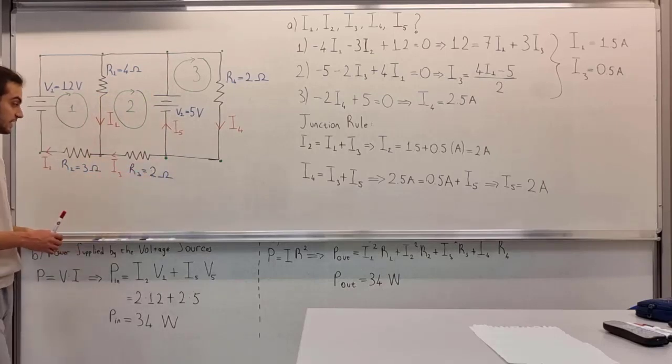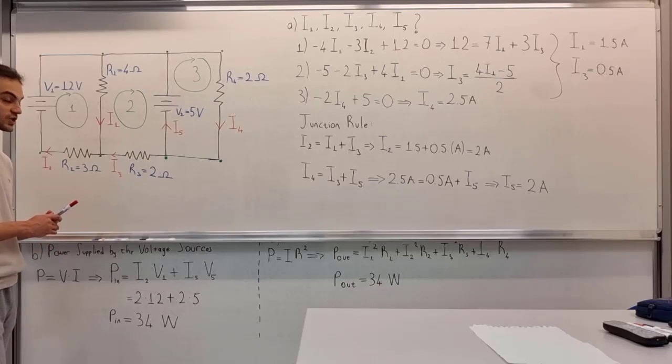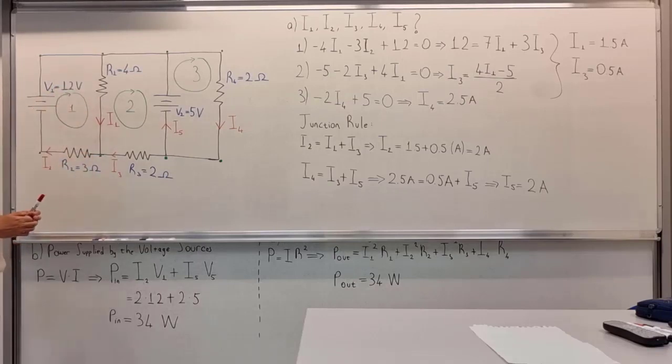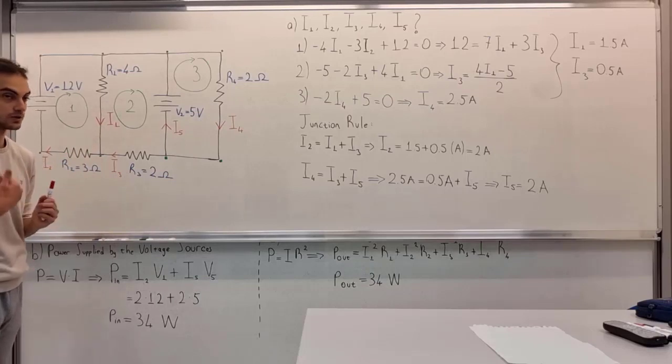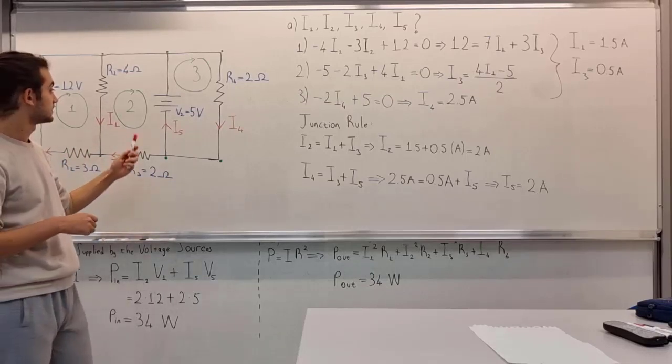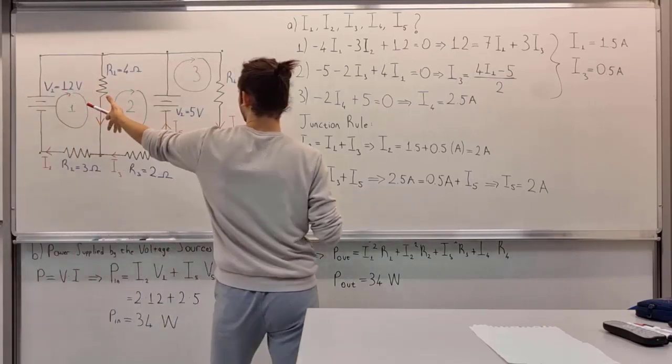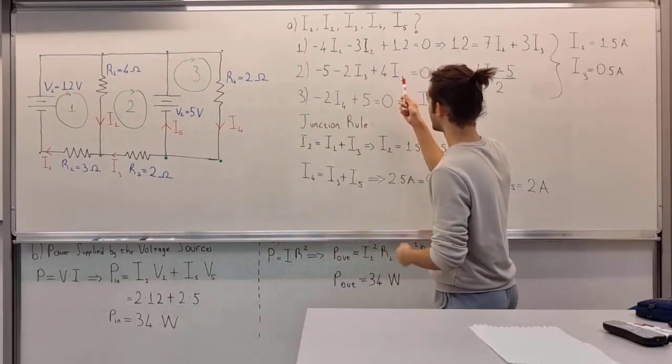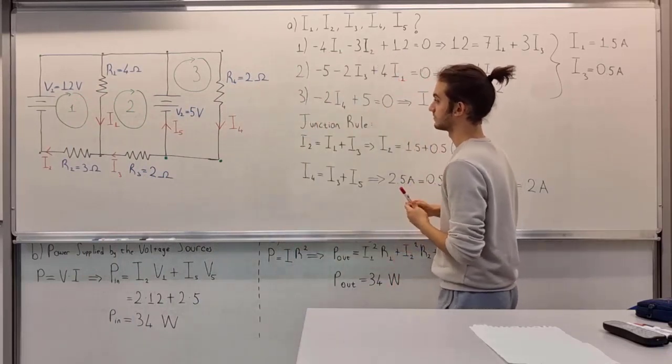whose current is in the same direction as we are going, so it comes with a minus sign again - minus 2I3. From point D to A, we see that the I1 current is in the opposite direction, so it has to come with a positive sign. Its voltage is 4I1, that is equal to 0.